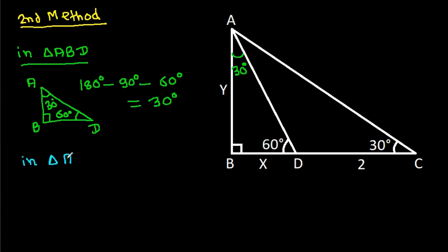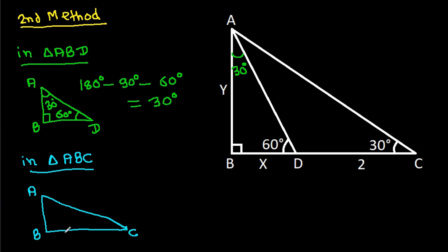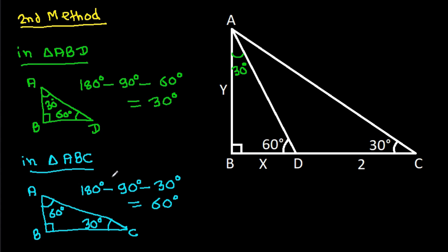Now, consider triangle ABC: this angle is 90 degrees and this angle is 30 degrees. So the remaining angle equals 180° − 90° − 30° = 60 degrees. That angle is 60 degrees. And this angle is 30 degrees.